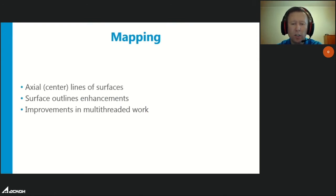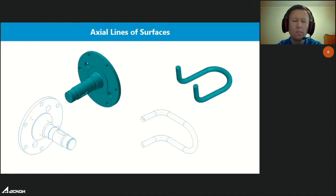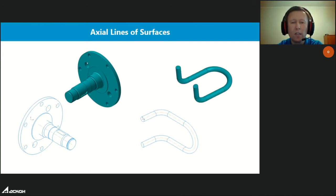In the projection section, the quality of surface outline drawing has been improved and multi-threaded processing development is actively continuing. It is now possible to project center lines of surfaces into drawings, implemented for elementary surfaces, rotation surfaces, and sweep surfaces. The visibility of these lines depends on the visibility of the corresponding surfaces in the drawing.